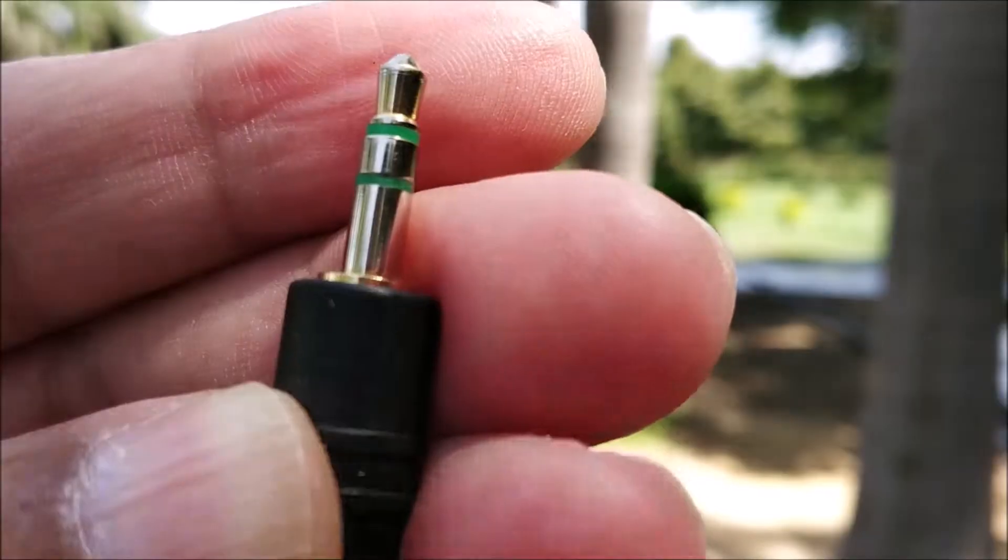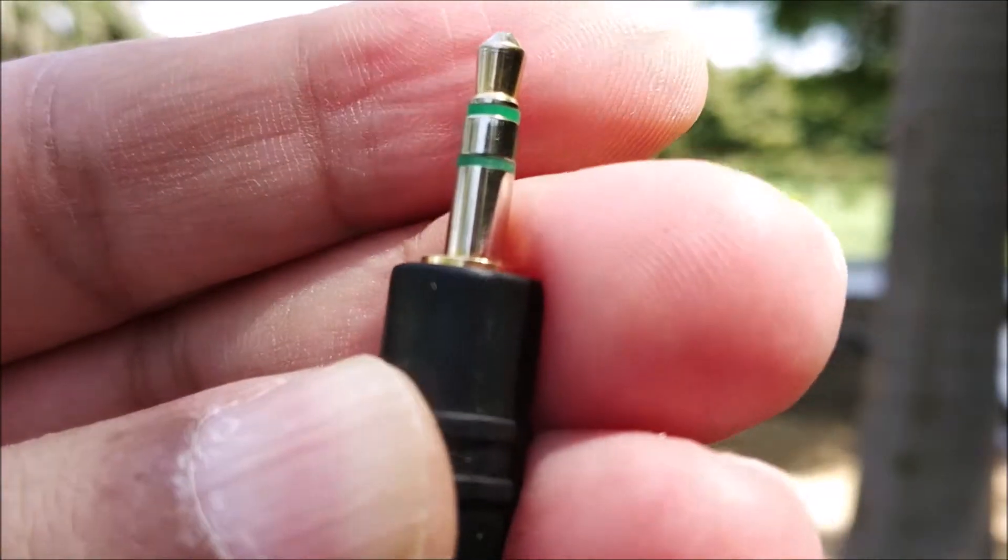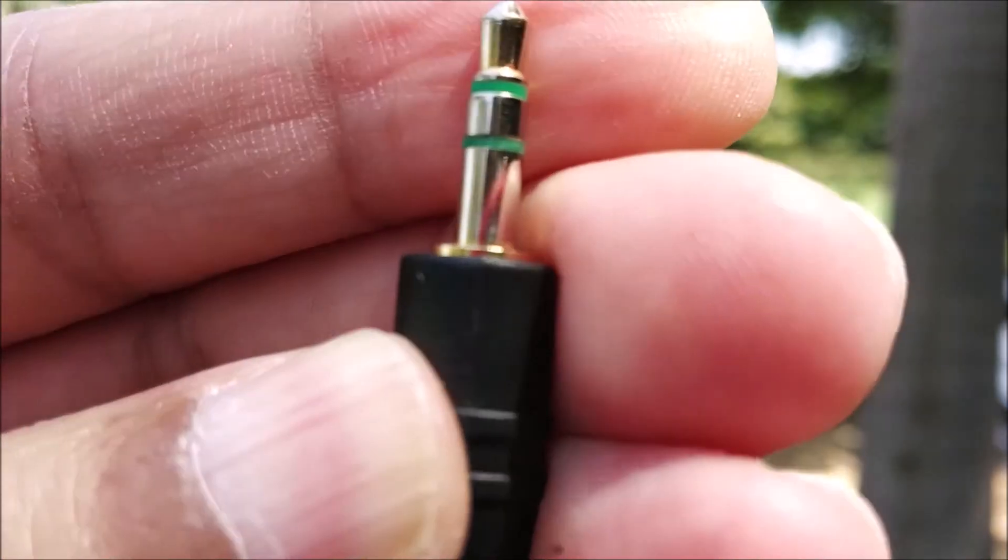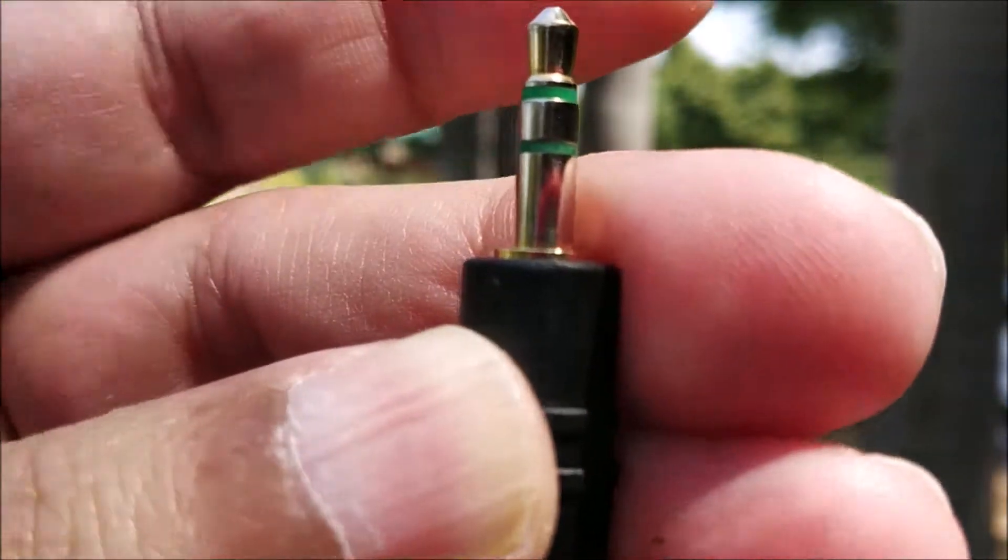Hi friends, so we all own headphones, earphones, and all these things, but have you ever looked at the audio jack or the 3.5mm audio jack that is given with your headphone? Let's look at it carefully. Let's look at this headphone jack. Now this has two rings, you see the green rings, the one in the center, these two rings.